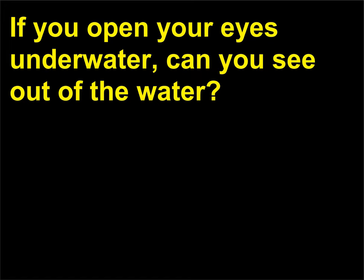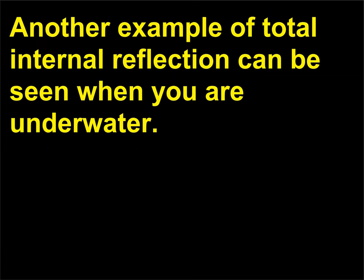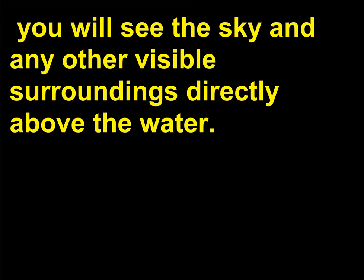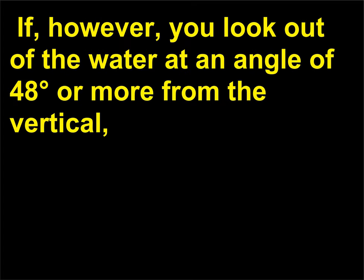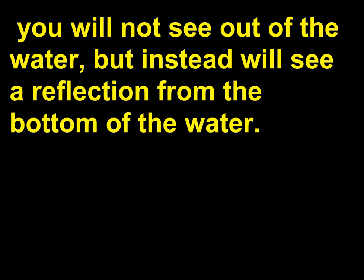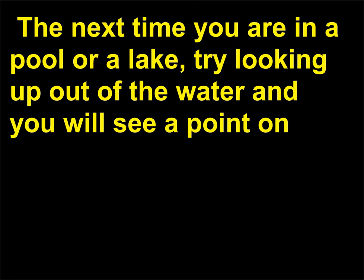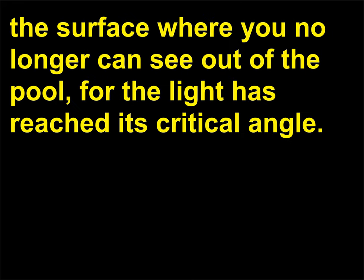If you open your eyes underwater, can you see out of the water? Another example of total internal reflection can be seen when you are underwater. If you look straight up out of the water, you will see the sky and any other visible surroundings directly above the water. If, however, you look out of the water at an angle of 48 degrees or more from the vertical, you will not see out of the water, but instead will see a reflection from the bottom of the water. The next time you are in a pool or a lake, try looking up out of the water and you will see a point on the surface where you no longer can see out of the pool, for the light has reached its critical angle.